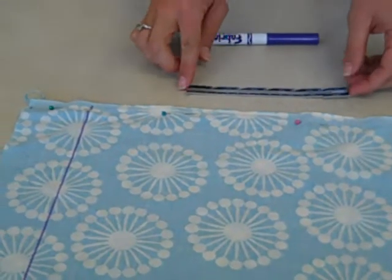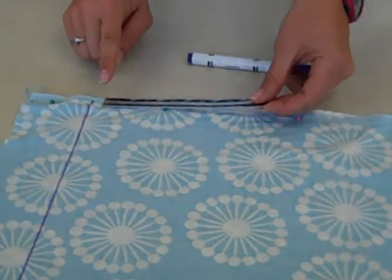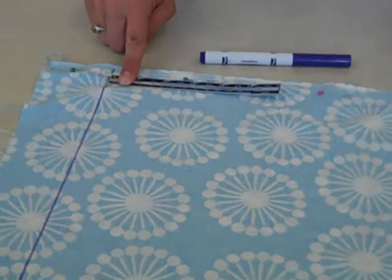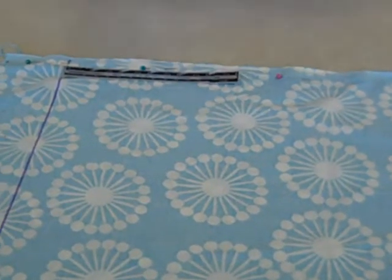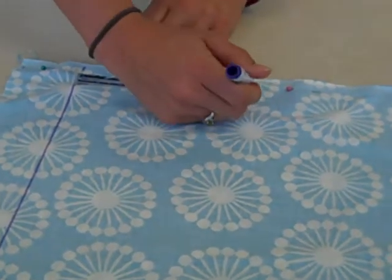Take your sewing gauge, put it even with your line along your salvage edge. This is your salvage edge. You're going to measure in six inches from your marker or colored pencil line. At that point, you're going to make a little mark.